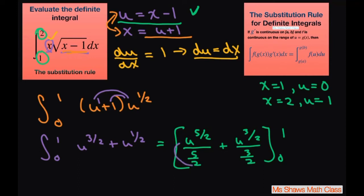Now this is going to be u to the 5 halves divided by 5 plus u to the 3 halves divided by 3. I just moved the 2 up and pulled it out, and then we're going from 0 to 1.